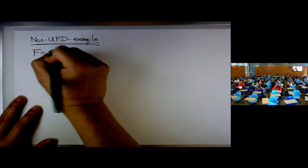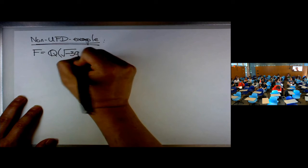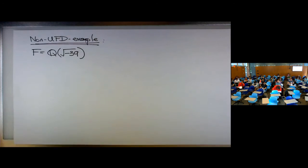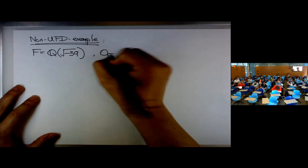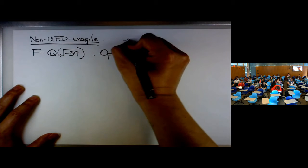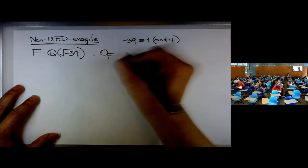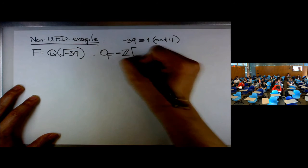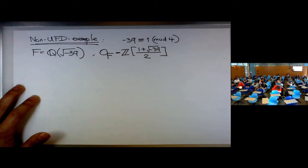It took me a long time to decide which field to take for this example. I'm going to take a complicated one. You can also take the example with negative 5, but I'll go with a more complicated one. My choice is Q(√-39), and note that -39 is congruent to 1 mod 4, which makes the ring of integers a little more complicated.